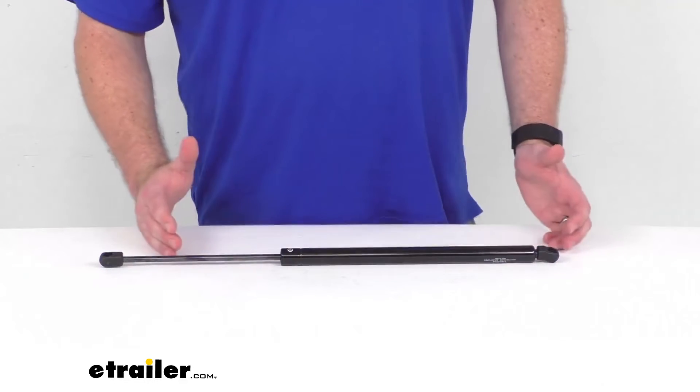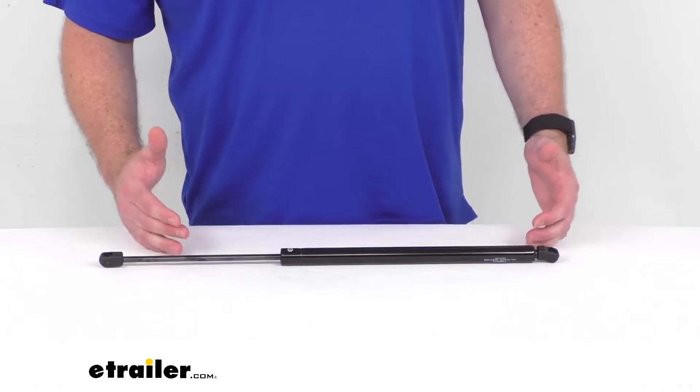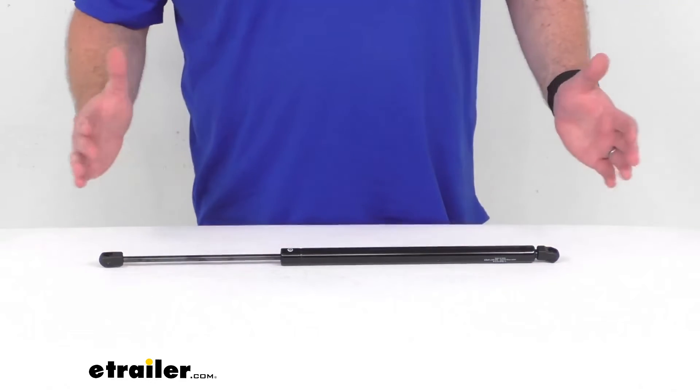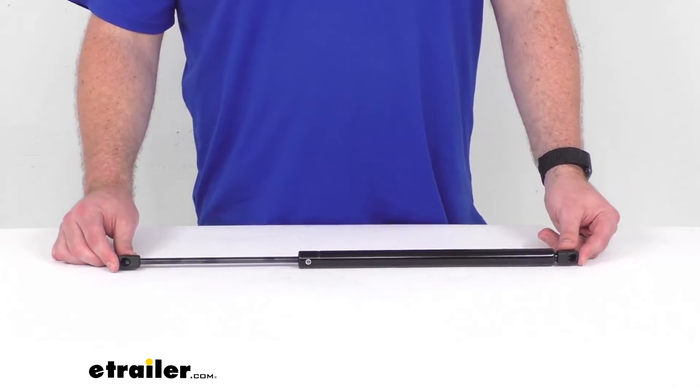This will extend to help hold your hatch open and then gently compress while you're closing it to ensure that you're not going to smash your fingers and that sort of thing.